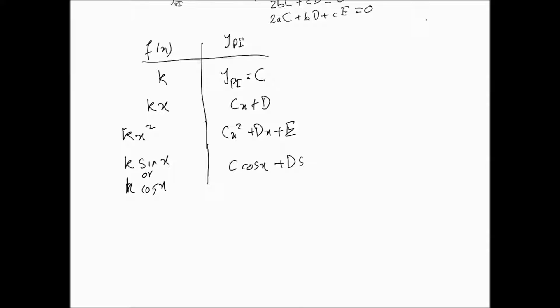For transcendental functions, if f(x) = k·sin(x) or k·cos(x), we use ypi = C·cos(x) + D·sin(x). However, you must be careful: these trial functions cannot already be part of the complementary function. If the complementary function is already a·cos(x) + b·sin(x), using C·cos(x) + D·sin(x) as the trial solution will fail — it gets absorbed and you won't be able to determine C and D.